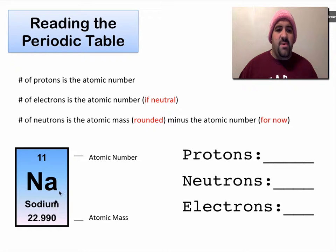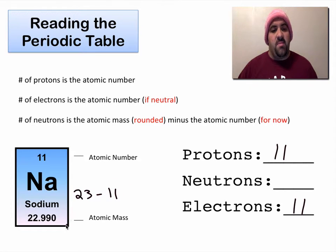So let's just do an example. Again, we have sodium. So how many protons? Well, number of protons is the atomic number. So we have 11 protons. The number of electrons is the atomic number if neutral. And we're going to assume all the atoms we're working with today are neutral, 11. And number of neutrons is the atomic mass rounded. So that rounds to 23 minus the atomic number, minus 11. The atomic number bottom minus the top. So there will be 12 neutrons.